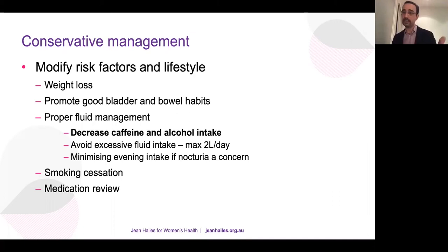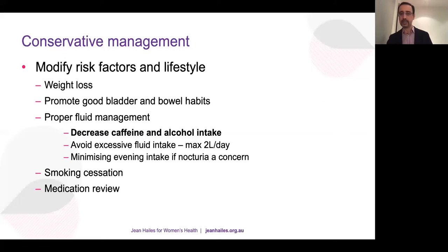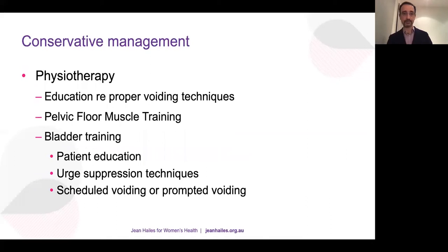Conservative management includes: weight loss; promoting good bladder and bowel habits — there are nice documents on the Continence Foundation of Australia website; proper fluid management; decreased caffeine and alcohol intake; avoiding excessive fluid intake — approximately 1.5 to 2 litres for an average person; minimising evening intake if nocturia is a concern; smoke cessation; medication review, especially for diuretics. Diuretics taken at nighttime can be moved to early afternoon so that diuresis occurs before sleep rather than causing nocturnal wakening.